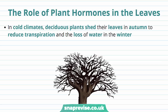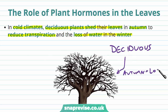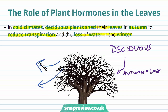Plant hormones play an important role in the leaves as well. In colder climates, deciduous plants shed their leaves in autumn to reduce transpiration and loss of water in the winter. Deciduous plants lose their leaves in autumn and regrow them in spring. The reason for this is to reduce transpiration, as it is very easy to lose water from the leaves in winter.